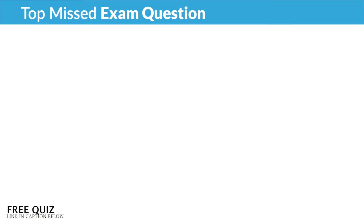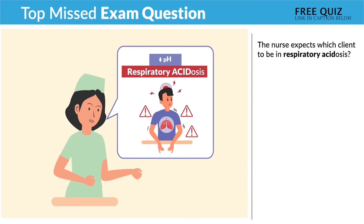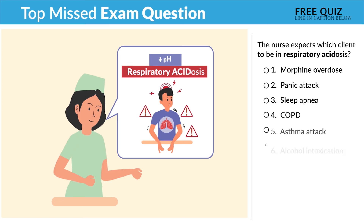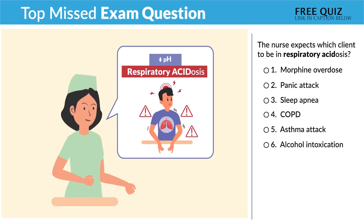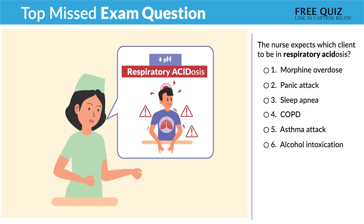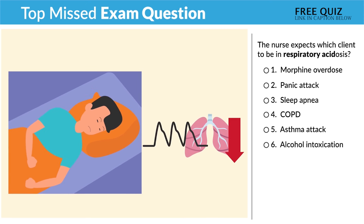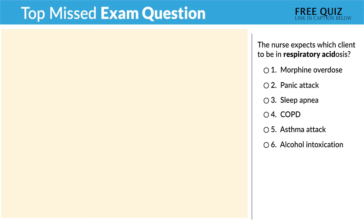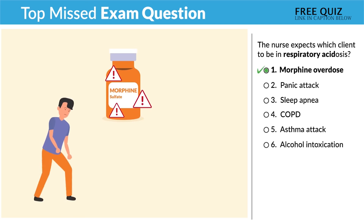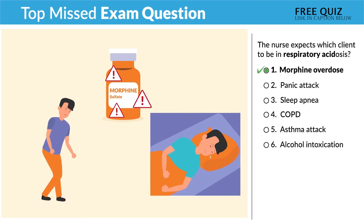Now for the top missed exam question: 'The nurse expects which client to be in respiratory acidosis.' Before looking at the options, remember acidosis is slow-sis — slow breathing. Option one: morphine overdose. Yes, it makes things low and slow, putting us into acidosis — like snoring. Acidosis.